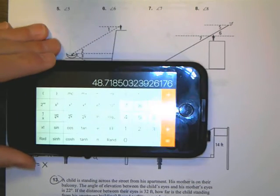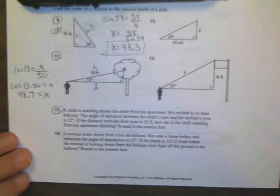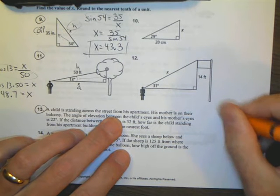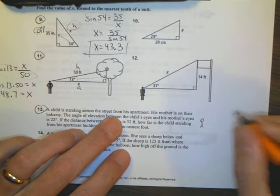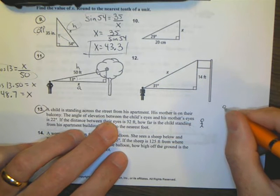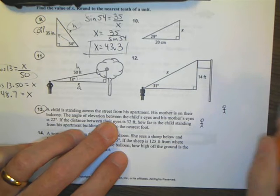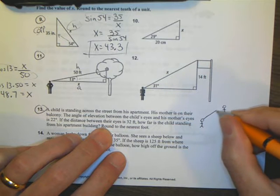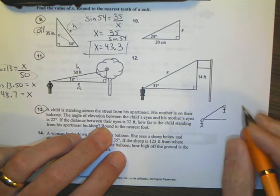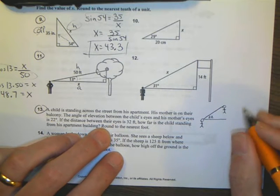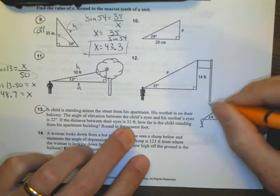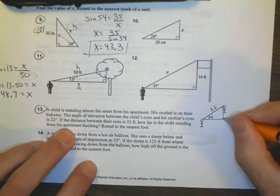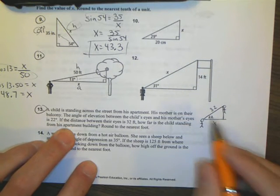Look at number 13. Number 13, we have a word problem, so we're going to want to draw a little picture here to begin with. The child is standing across the street from his apartment. Here's the kid standing there. His mother is on their balcony, so mom is up here somewhere. The angle of elevation between the child's eyes and his mother's eyes is 22 degrees. If the distance between their eyes is 32 feet, so if this length is 32, how far is the child standing from his apartment building? They want to know how far is it from the apartment building.